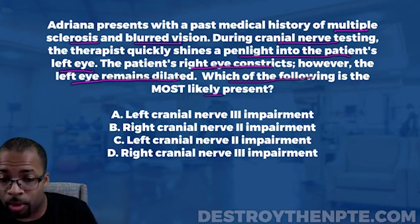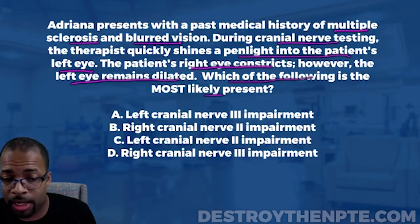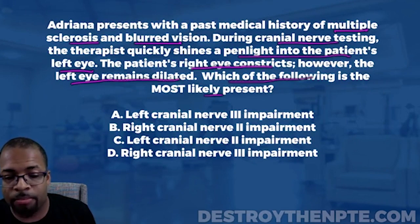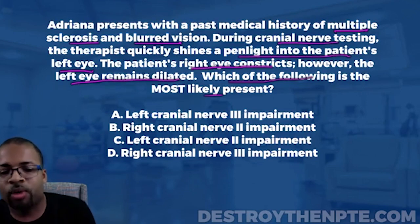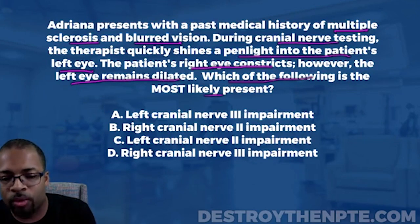Going back to the answer choices: A is left cranial nerve 3 impairment, B is right cranial nerve 2 impairment, C is left cranial nerve 2 impairment, and D is right cranial nerve 3 impairment.